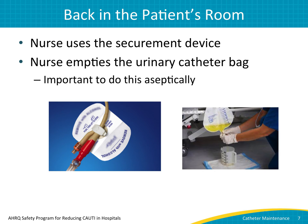'Okay, thanks.' After having the conversation, the nurse and the transporter go back into the patient's room. The nurse places the securement device on the patient's leg, making sure to show the transporter how to use this device. Next, the nurse empties the urinary catheter bag. Remember, it's important to do this aseptically by using good hand hygiene practices and avoiding contamination by keeping the spout from touching the sides of the graduated cylinder.